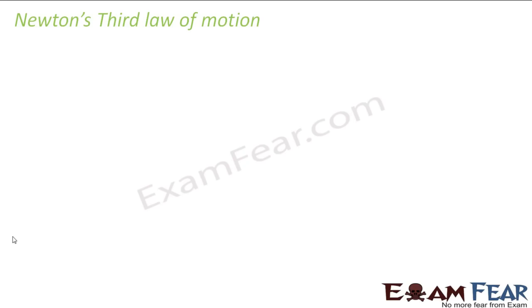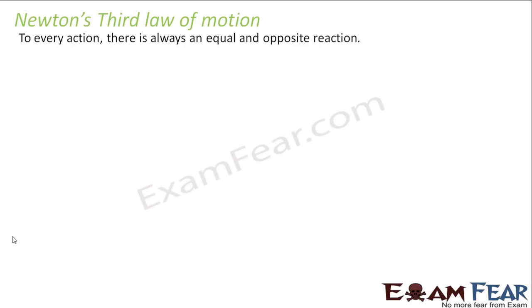Let us quickly see what does the third law of motion state. The third law of motion states that to every action there is always an equal and opposite reaction. This is the most popular law of motion. Most of the times you will see people say every action has equal and opposite reaction. That means for every force which is acting on an object there is an equal and opposite force which is being exerted on that object.